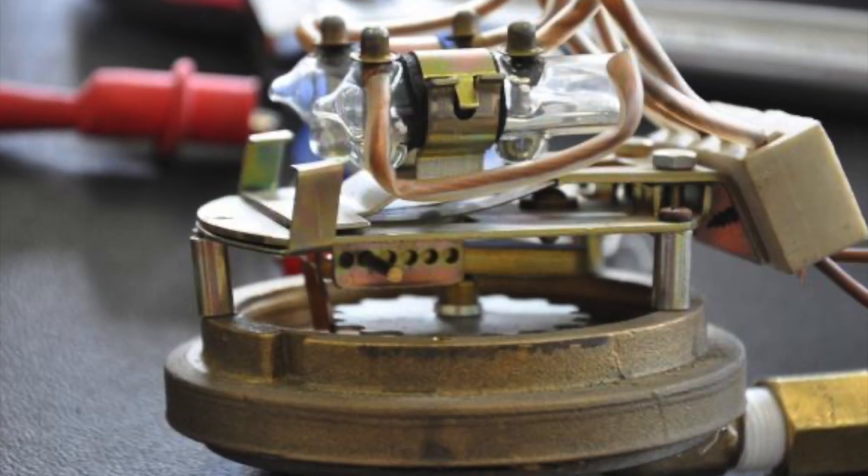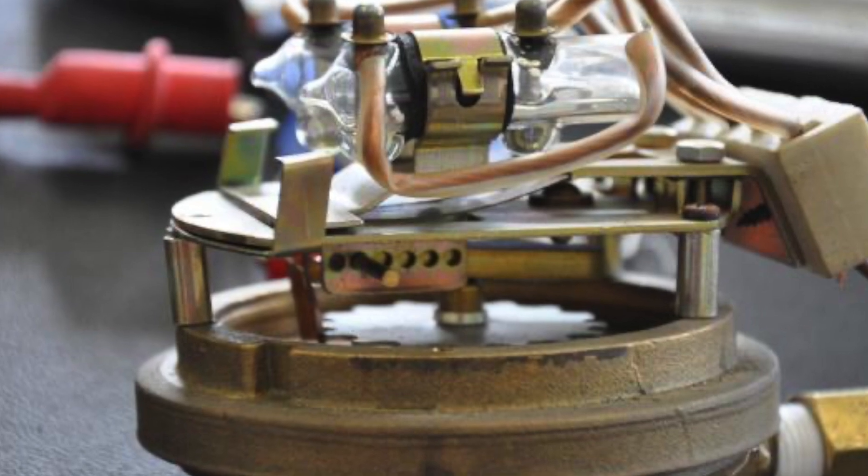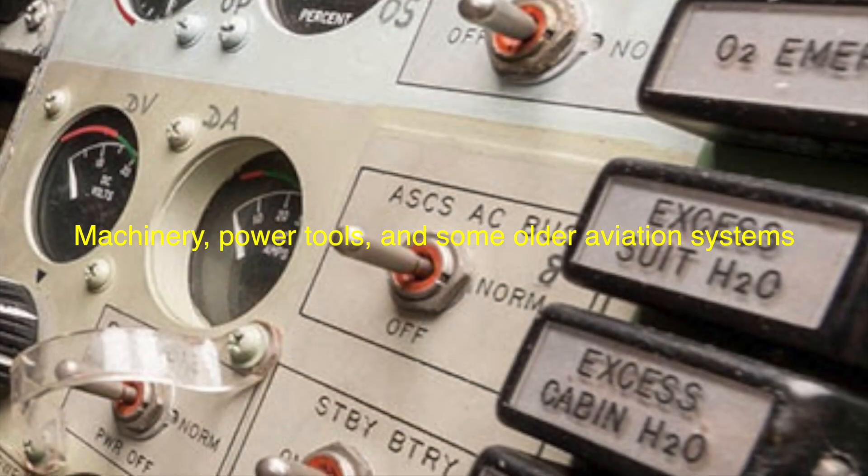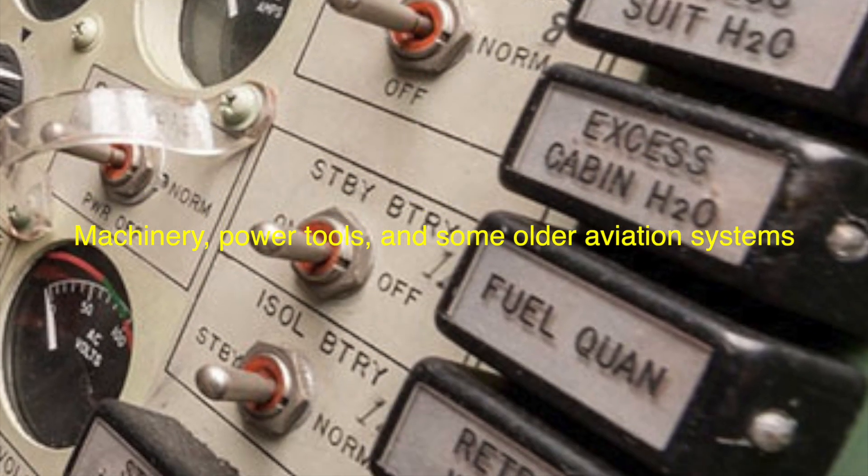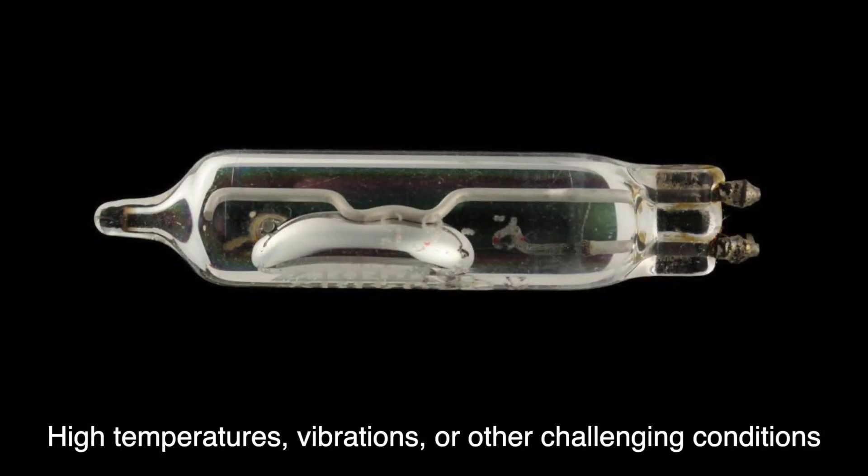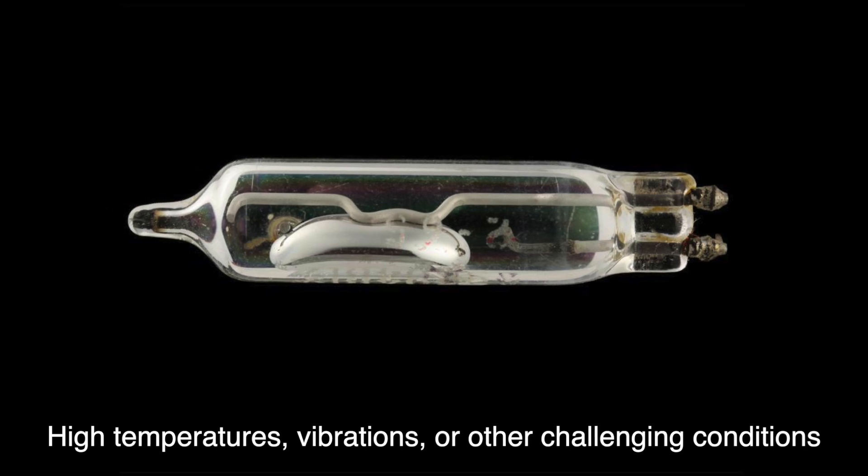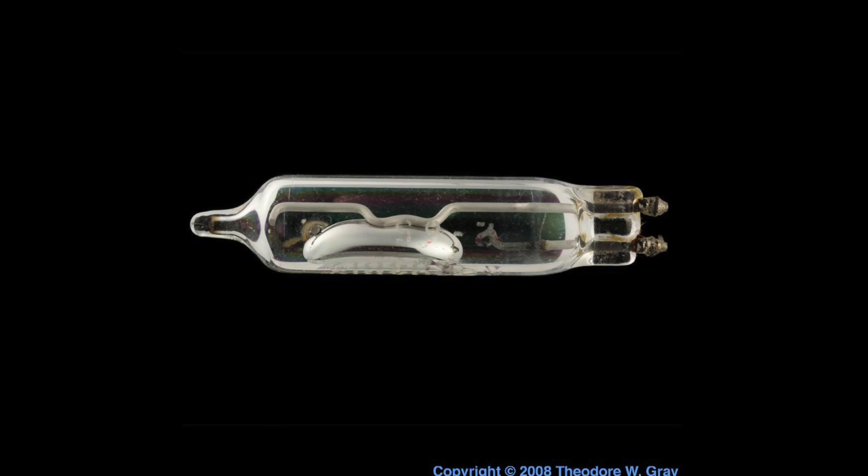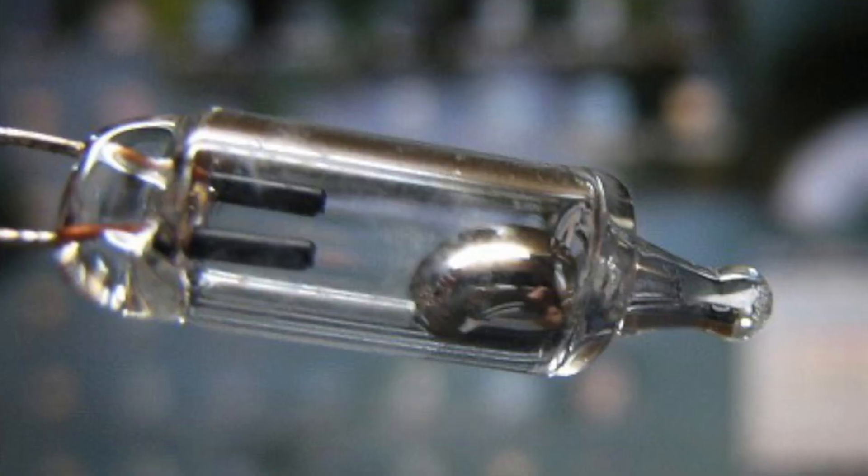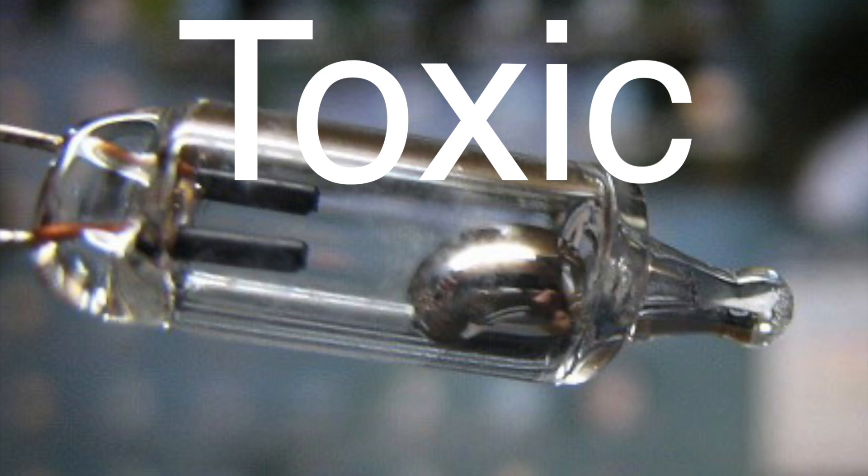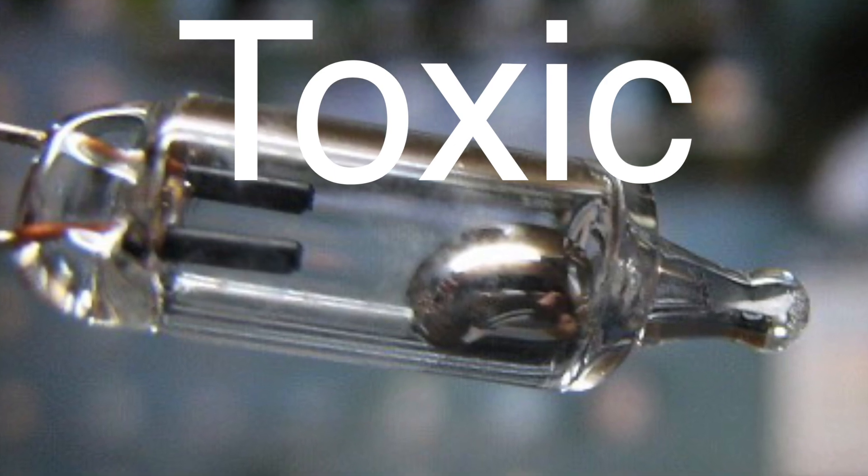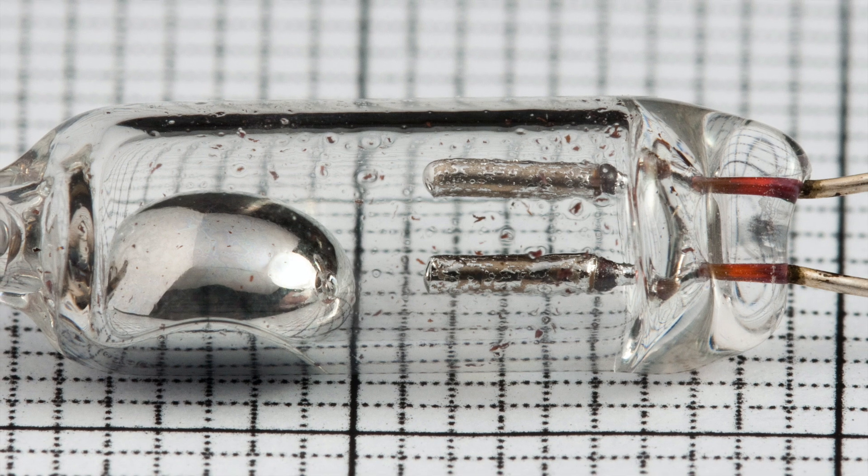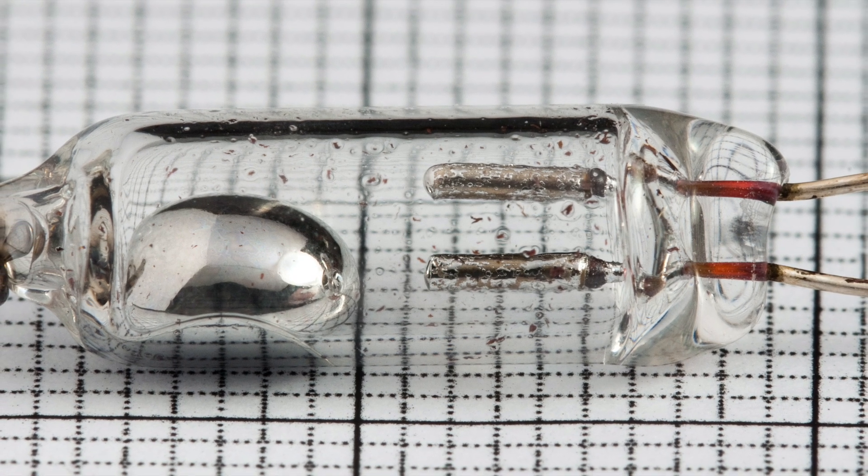You could also find mercury switches in anti-theft systems, where any movement of the car could trigger an alarm. Then there are industrial applications. Mercury switches have been used in machinery, power tools, and even in some older aviation systems. Their ability to function well in harsh environments, whether it's high temperatures, vibrations, or other challenging conditions, made them a solid choice. However, because mercury is toxic, its use in modern devices has been reduced in favor of more environmentally friendly options. That said, they still pop up in legacy systems and specialized equipment.